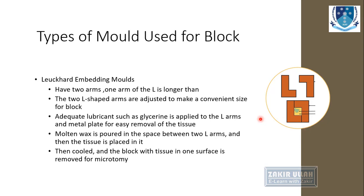The Leuckhart embedding mold: these are molds which have two L-shaped arms, where one arm is longer than the other. The two L-shaped arms are adjusted to make a convenient size for a block. Before adjustment, a lubricant — usually glycerin — is applied on the arms, because after block formation these plates can be easily removed with the help of this lubricant. The molten wax is poured into the space between the two L arms, and then the tissue is placed in between. The plates are then cooled and the block with tissue is removed for the microtome.